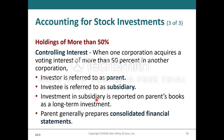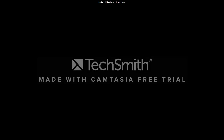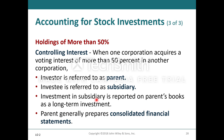For holdings of more than 50%: when one corporation acquires a voting interest of more than 50% in another corporation, the investor is referred to as a parent and the investee is referred to as a subsidiary. The investment in the subsidiary is reported on the parent's books as a long-term investment, and the parent generally prepares consolidated financial statements that recognize the activity from the subsidiary.